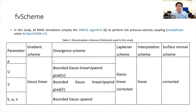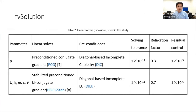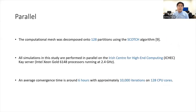Simulations presented here are all steady-state. Gradient and Laplacian terms are discretized using Gaussian integration with linear interpolation. Velocity and nu-tilde are discretized using the linear upwind scheme, while the remaining convective terms are discretized using the upwind scheme. For linear solvers, we're using PCG with the DIC preconditioner for pressure, and smoothSolver with PBICG with DILU for asymmetric matrices. The Scotch algorithm is used to decompose the mesh into 128 pieces.